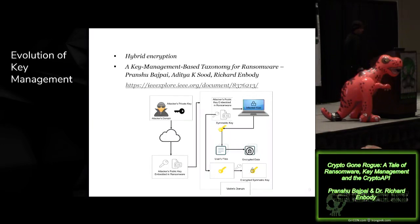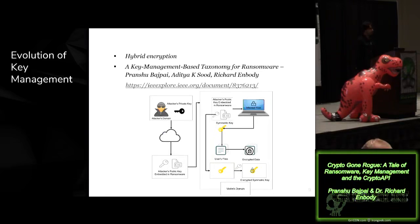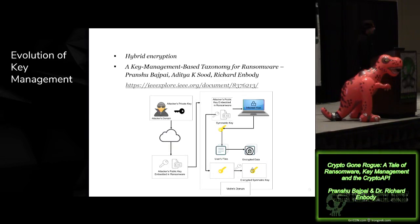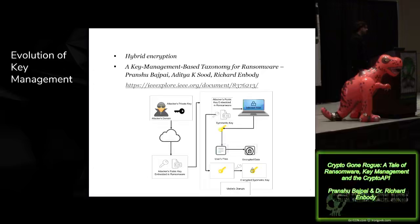The evolution of key management — we're only going to discuss the hybrid encryption scheme during this talk for the sake of time. Key management has evolved quite a bit in ransomware variants starting in 2005–2006 when GPcode and similar ransomware were first coming out. If you want to read the details, we've discussed it in our paper. What they're using right now and what's important for this presentation is a hybrid encryption scheme — called hybrid because it's a combination of symmetric and asymmetric encryption. They take a symmetric key to encrypt user's data, then use the attacker's public key to encrypt the symmetric key once it's done encrypting.